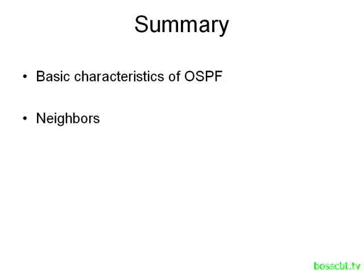Then we talked about neighbors — how hello messages are sent, what's inside of them, and the overall process of how two routers get to the two-way state of becoming neighbors. We also mentioned that the hello message is sent to the multicast IP address 224.0.0.5. Remember, that's a dedicated IP address just for OSPF — make sure you remember that one.